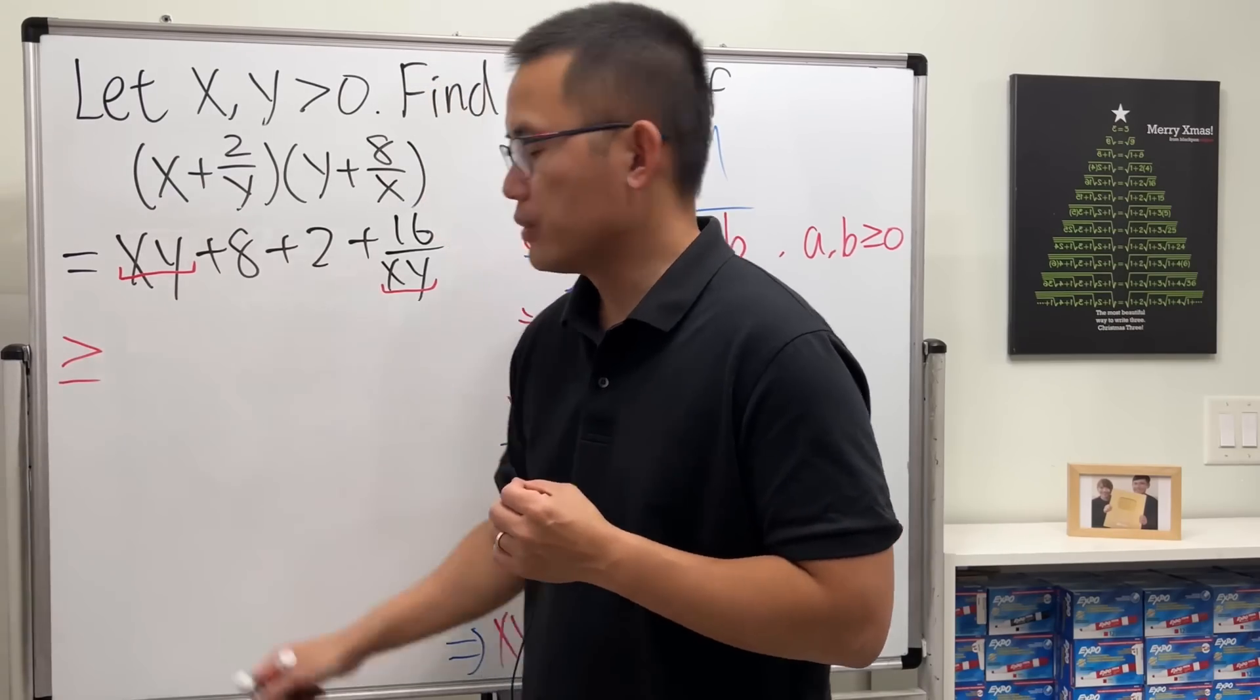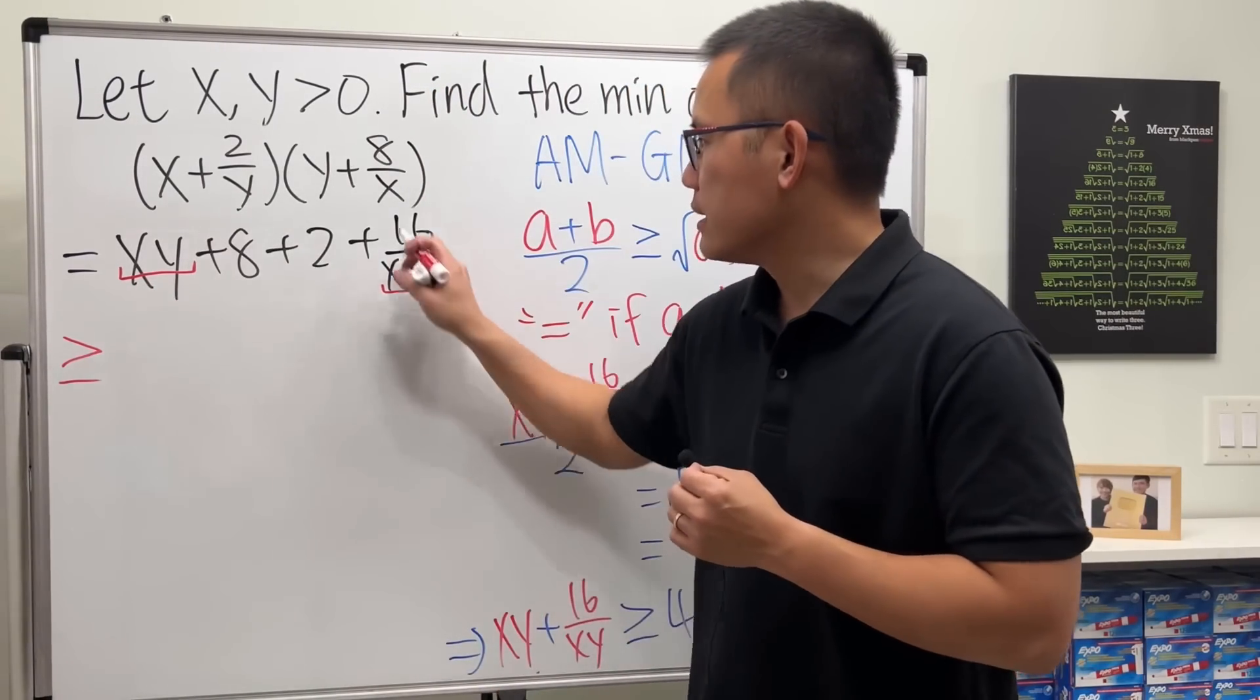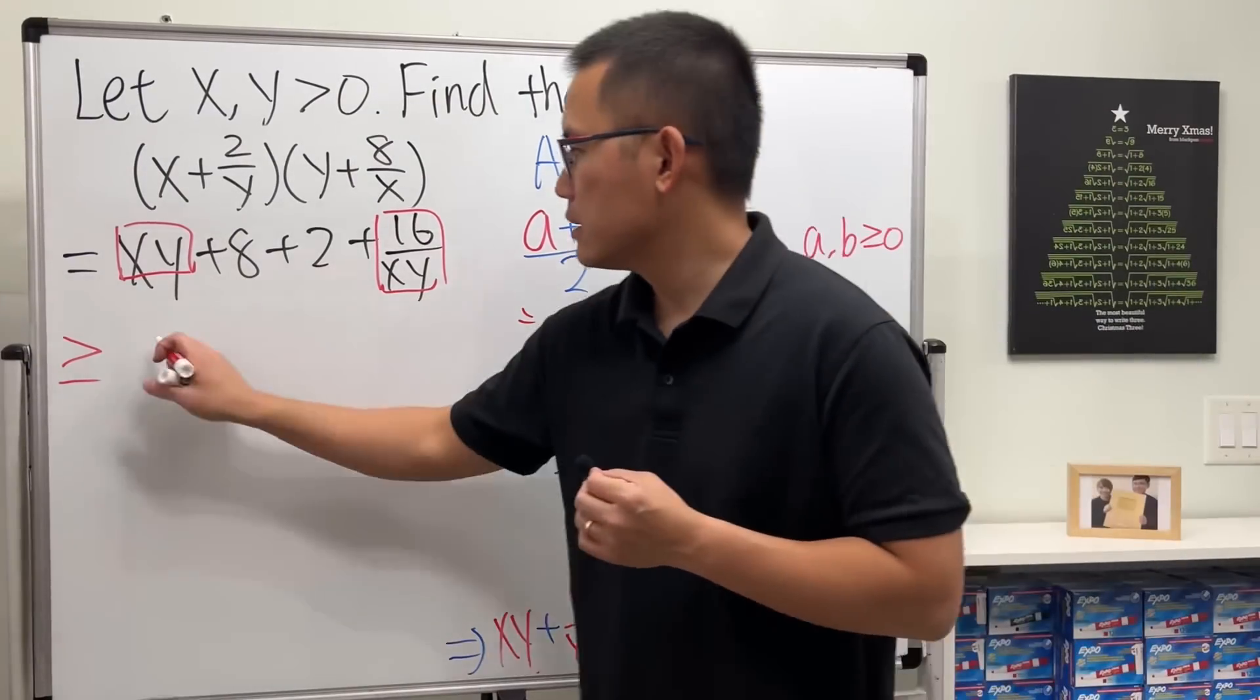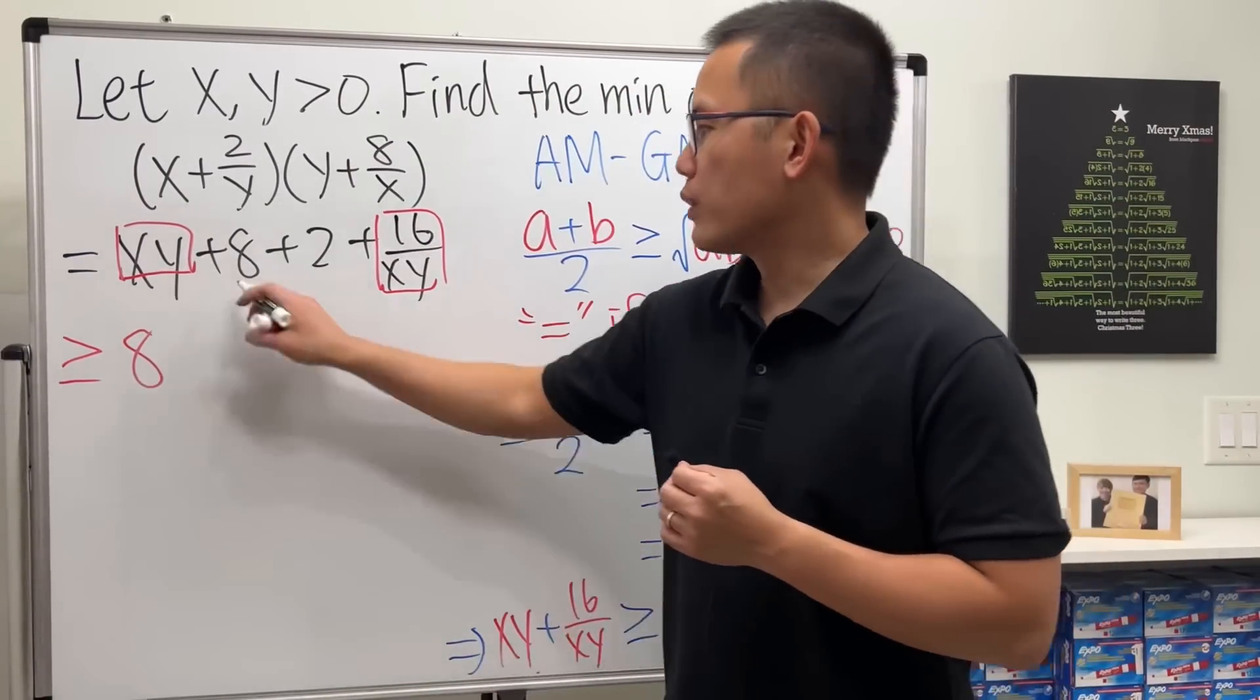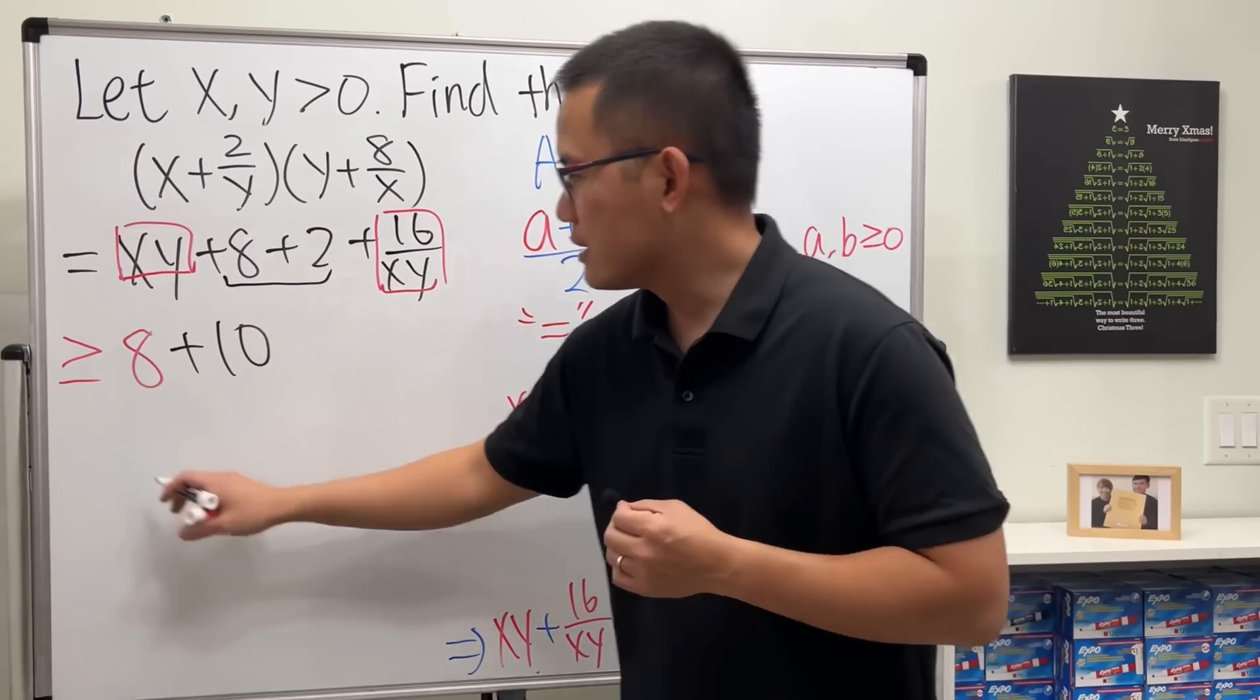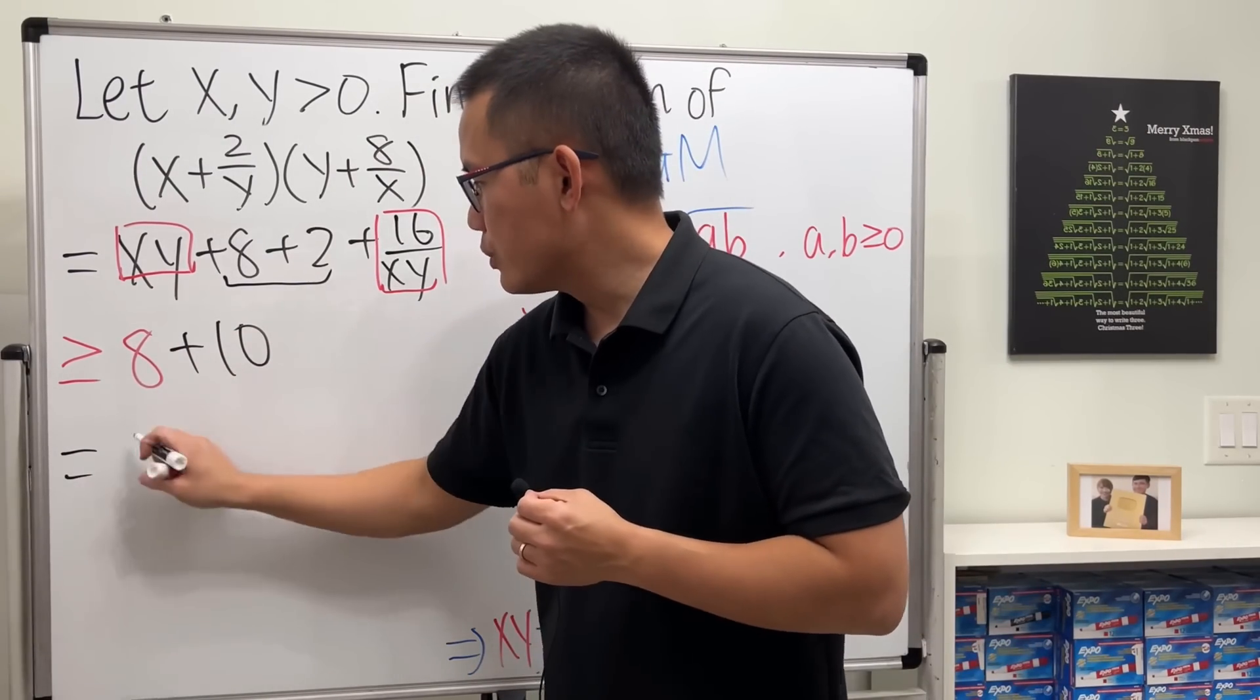So we can go back there and then just do the following. We can say this is going to be greater than or equal to—the red part together, let me just kind of box it—and we can replace that with 8. And of course, 8 plus 2 is 10, so all together this right here is equal to 18.